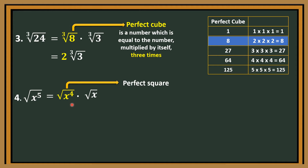So we can now divide the exponent. We have x to the fourth power over 2, and then copy the square root of x. Dividing the exponent gives x squared, and we copy the square root of x. So the final answer is x squared times the square root of x.